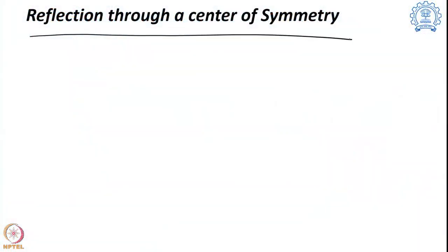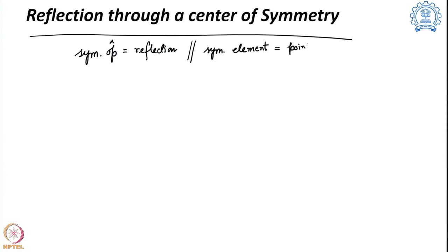In this segment we are going to cover the third one: reflection through a center of symmetry. The symmetry operation here is reflection, but the symmetry element is not a plane — it is a point, just a center or dot. This is known as reflection through a center of symmetry, and another name for it is the inversion center, which is why in short form it is called I.